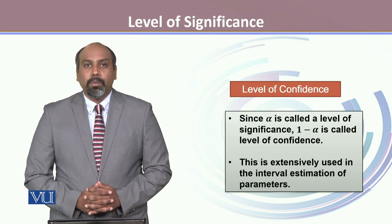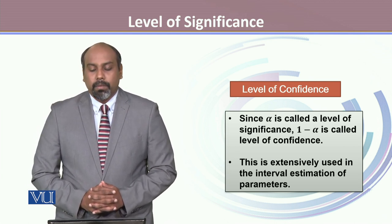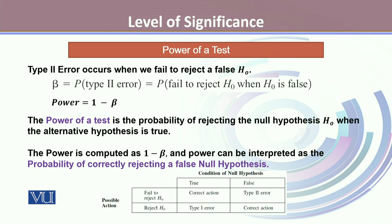The level of confidence is extensively used in the interval estimation of parameters. Another important concept related to the level of significance is the power of a test. Power of a test originates from the type 2 error. The type 2 error occurs when we fail to reject a false null hypothesis. It is denoted by beta, which is the probability of committing type 2 error.